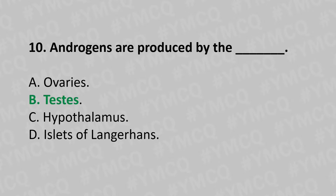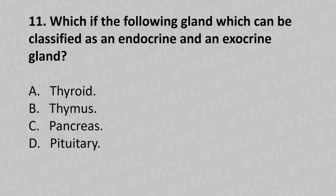Moving to our eleventh question. Which of the following glands can be classified as both endocrine and exocrine? Option A: thyroid. Option B: thymus. Option C: pancreas. Option D: pituitary. And the answer is Option C: pancreas.